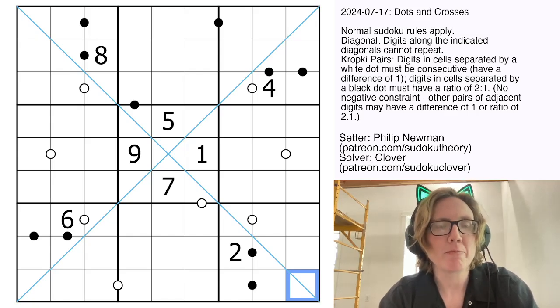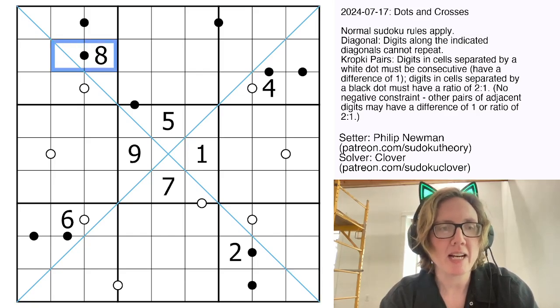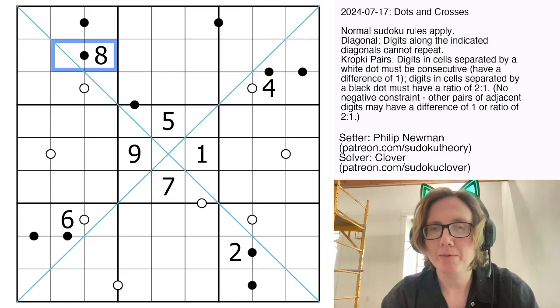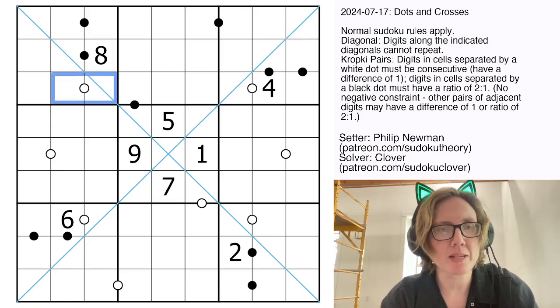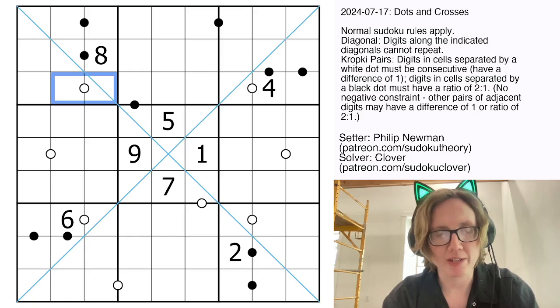Then there are also some black and white dots in the grid. Digits that are separated by a black dot have to be in a 1 to 2 ratio, in other words, one of them is twice as large as the other. And digits that are separated by a white dot have to be consecutive, so one of them is one smaller or one greater than the other.